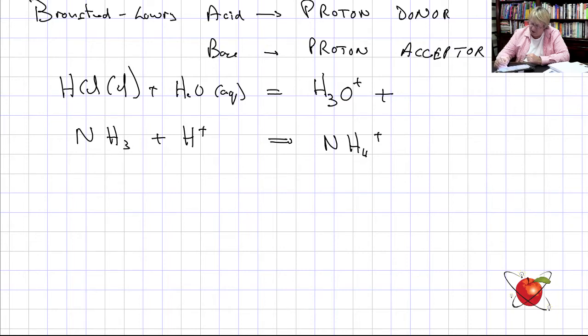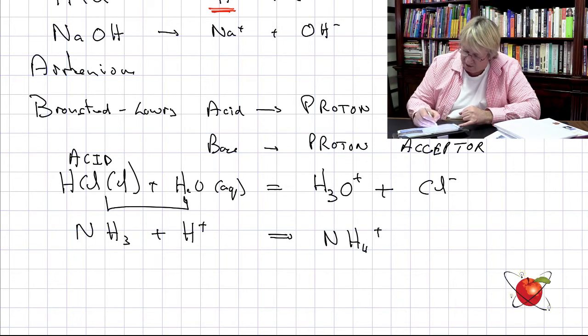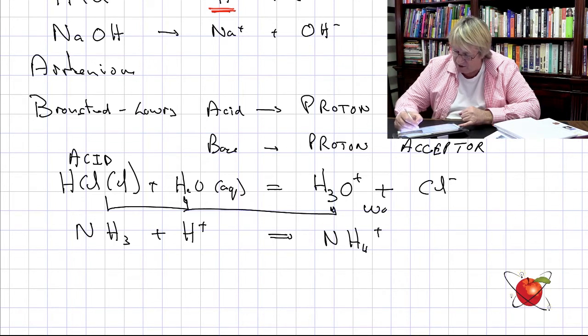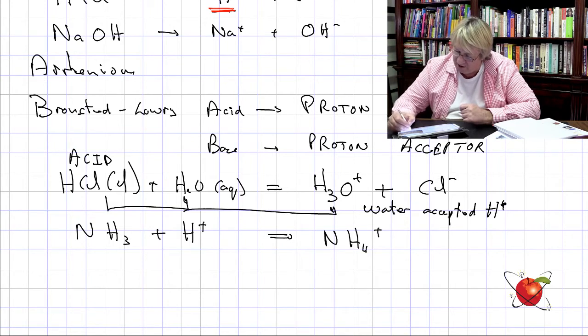HCl goes to Cl⁻ — let's not worry about balancing for now. The acid donated a proton to the water. Water accepted an H⁺ — a proton. Water is therefore a proton acceptor, which by definition means H₂O in this case is a base.